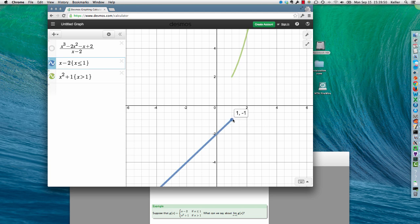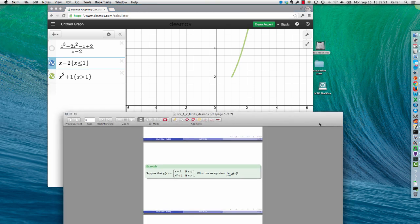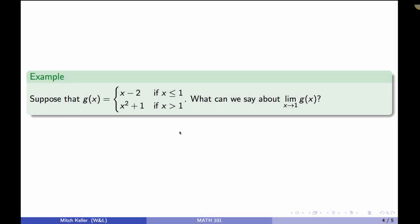So we would say that this limit does not exist because when we look at it from the left and we look at it from the right, we find different values, and that's a problem. It means that our limit doesn't exist.